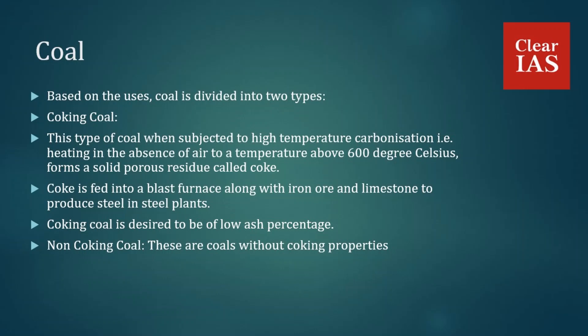Coking coal is a type of coal that, when subjected to high-temperature carbonization — that is, heating in the absence of air to a temperature of about 600 degrees Celsius — forms a solid porous residue called coke. Coke is fed into a blast furnace along with iron ore and limestone to produce steel in steel plants. Coking coal is characterized by a low ash percentage.